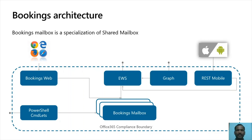For example, you could have a requirement for services offered by the IT and finance departments. Since they will typically be managed and serviced by two separate groups, you would create two Bookings mailboxes — one for IT and another for finance. Bookings mailboxes are managed by PowerShell admin commandlets. EWS contains methods required by the Bookings Graph APIs, and the web app uses an internal version of the API to manage Bookings mailboxes. The REST mobile endpoint is used by Bookings iOS and Android apps. All Bookings data resides in the Exchange Online data store, and the data residency for Bookings is the same as that of Exchange mailbox data residency. Any control or limitation that you get with Exchange Online is applicable for Bookings as well.